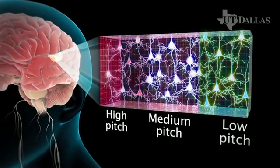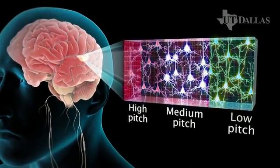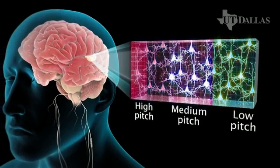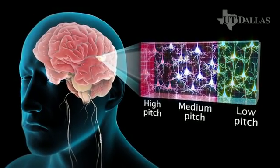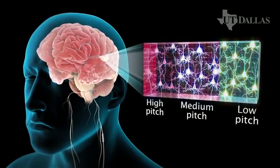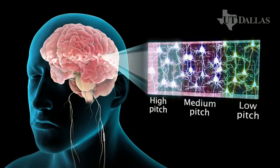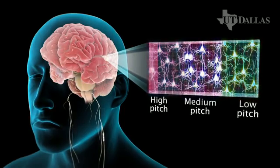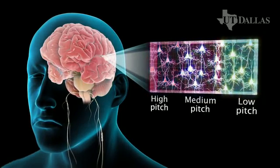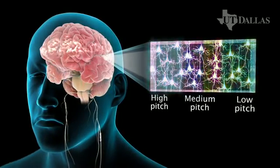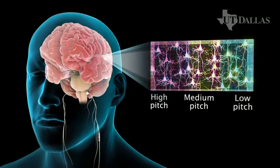To treat tinnitus, we could use vagus nerve stimulation paired with the presentation of tones that activate brain regions above and below the hyperactive region of auditory cortex. This therapy drives brain plasticity to shrink the hyperactive region.